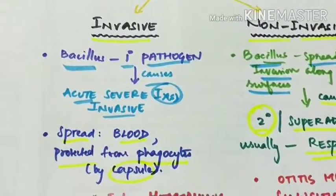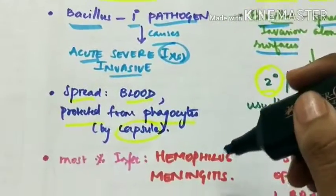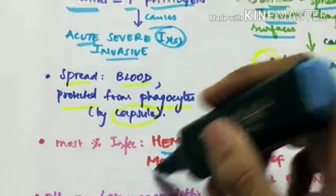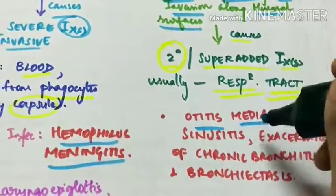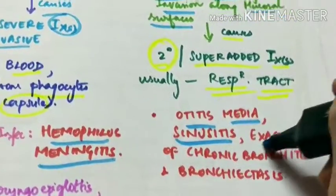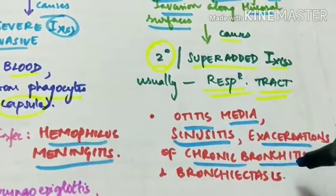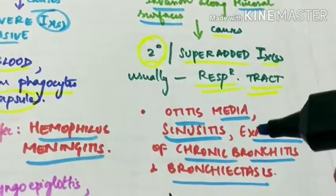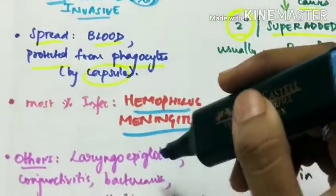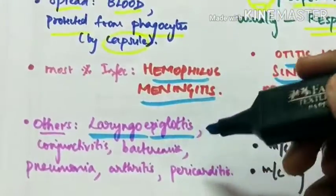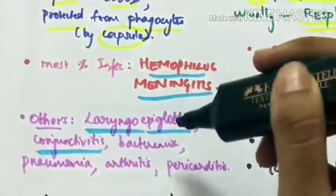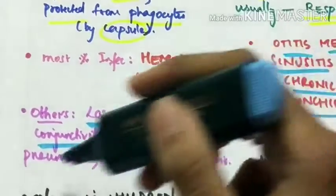The most important infection caused by invasive type is Haemophilus meningitis. Whereas in non-invasive, the infections include otitis media, sinusitis, exacerbations of chronic bronchitis and bronchiectasis. The other diseases caused by invasive are Laryngoepiglottis, Conjunctivitis, Bacteremia, Pneumonia, Arthritis and Pericarditis.